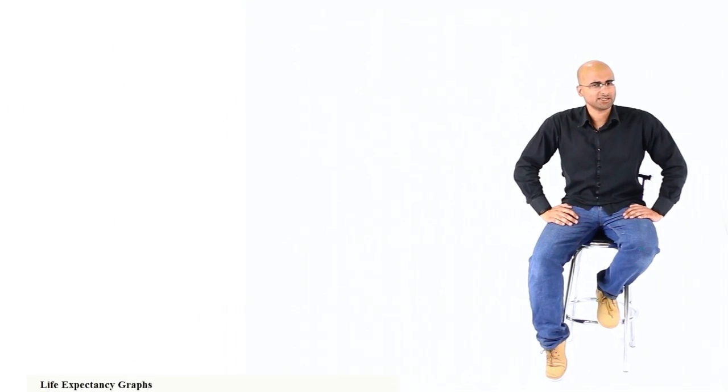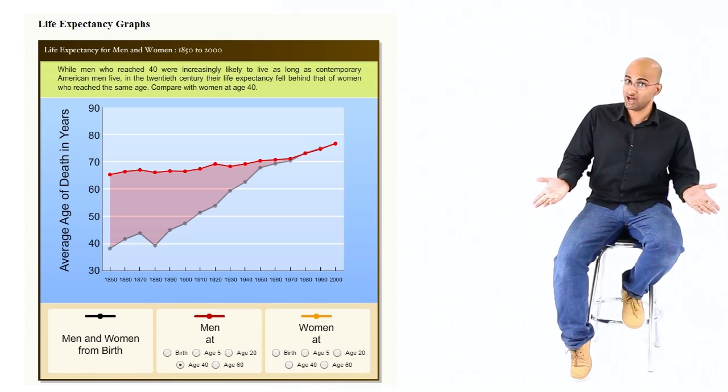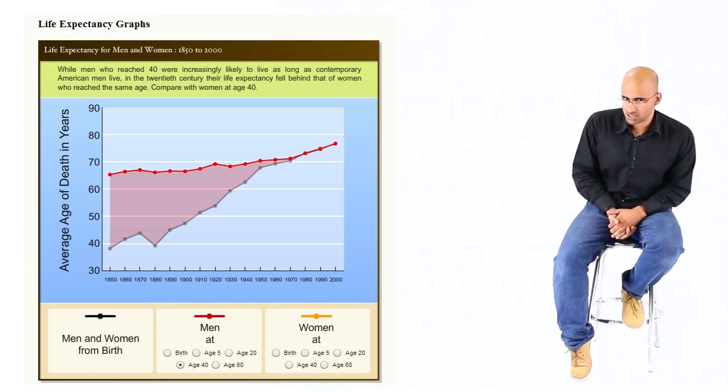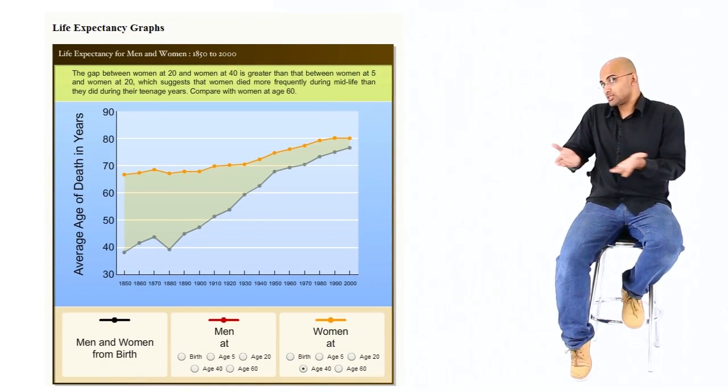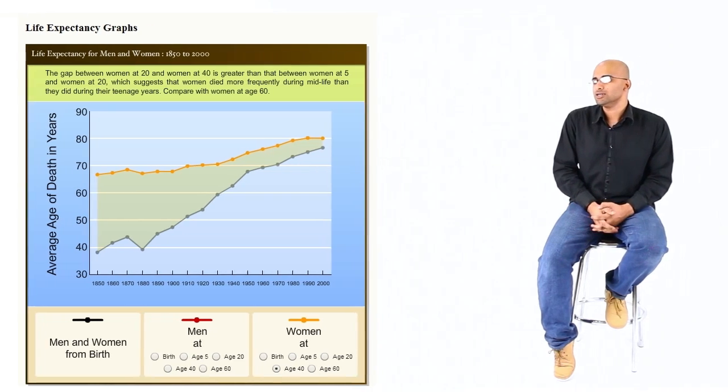It turns out that life expectancy measures take into account infant mortality, babies dying. And that means that the data gets skewed. It turns out that in old times, if you lived around 40 years or so, you were pretty much set for life. Pun intended.